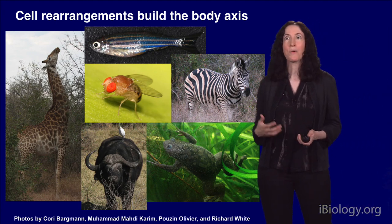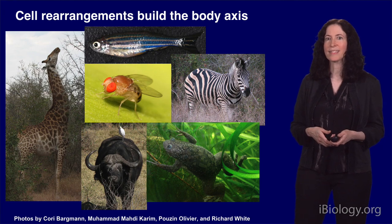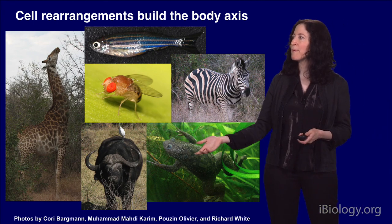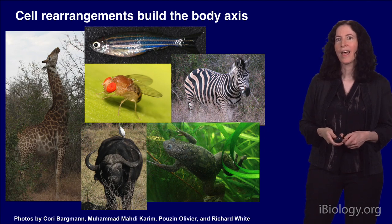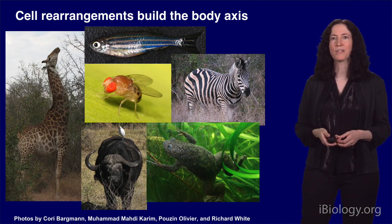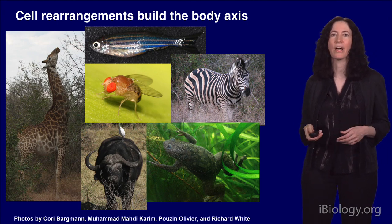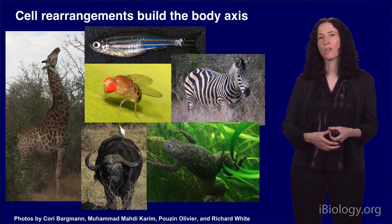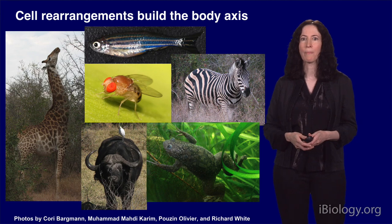Today I'm going to talk about an organizational problem faced by many animals, which is how to build a body axis that's elongated from head to tail. This is a process that happens in fish, in frogs, and it happened to you or you wouldn't be watching this talk. During this process, all of these animals need to reorganize an amorphous mass of cells — hundreds of cells or more — into one that's highly elongated along one axis, to produce the characteristic elongated shape of the body plan.